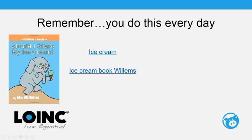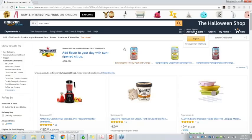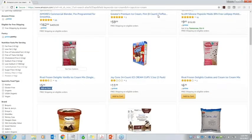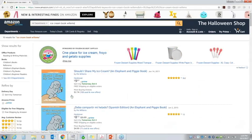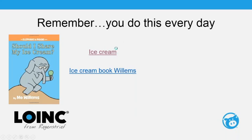Let's start with an example. Searching in LOINC is no different than searching anywhere else. If you're looking for the book 'Should I Share My Ice Cream?' by Mo Willems on Amazon, would you just search for 'ice cream' or would you search for 'ice cream book Willems'? Searching just 'ice cream' returns irrelevant results, but adding 'book Willems' gets you exactly the book you want.